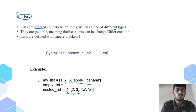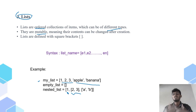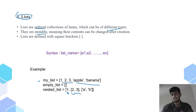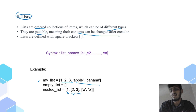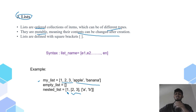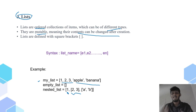Lists are mutable. Mutable means they can change. Once you have declared a list, you can access it later and change its value. Tuples, however, cannot be changed — we will see that in the next video. Mutable means: once you declare it, you can still change the values inside it after creation.